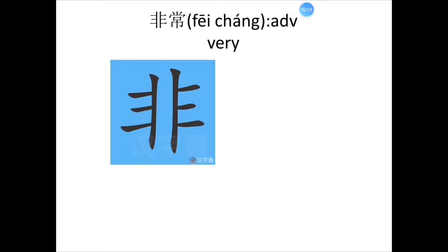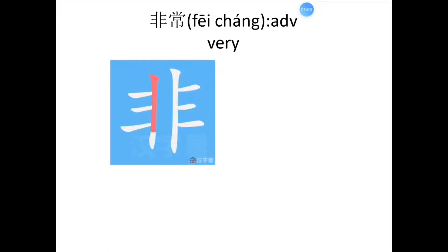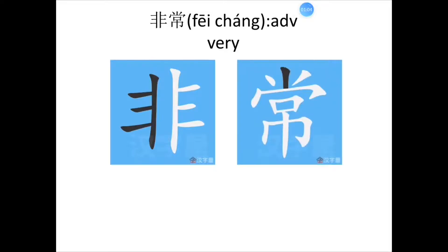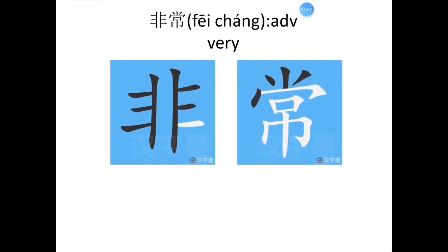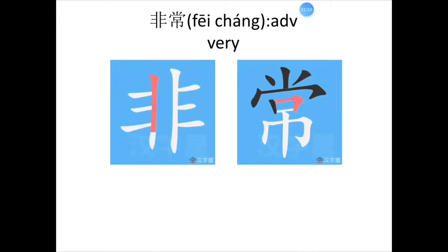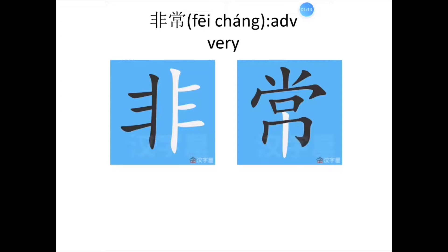Now let's see the second Chinese character, 长. 一, 二, 三, 四, 五, 六, 七, 八, 九, 十, 十一.